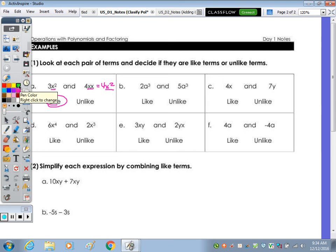Moving right underneath, we have x to the fourth and x cubed, that would be unlike. A cubed and a cubed, that's like. xy and yx, that's like because multiplication is commutative. You can change the order and you still get the same answer. So xy is the same as yx, and 3xy and 2xy would be like terms. 4x, 7y, those are unlike. And then a and a would be like.